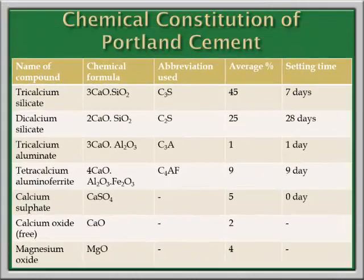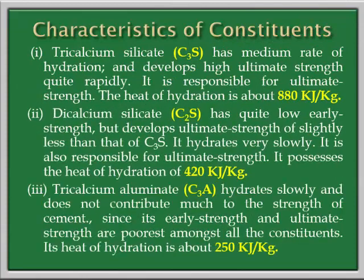The chemical constitution of Portland cement is as follows. The average percentage of tricalcium silicate is around 45%, and dicalcium silicate (C2S) takes around 28 days for setting. The first constituent, tricalcium silicate, develops high ultimate strength quite rapidly and is responsible for ultimate strength. Its heat of hydration is about 880 kilojoules per kg. Dicalcium silicate is also responsible for ultimate strength but slightly less than C3S; its heat of hydration is 420 kilojoules per kg. Tricalcium aluminate does not contribute much to strength; early and ultimate strength are poorest among all constituents, with heat of hydration around 250 kilojoules per kg.